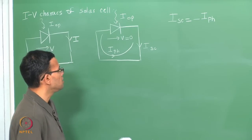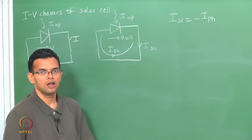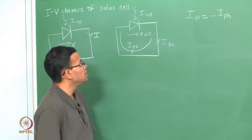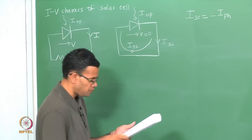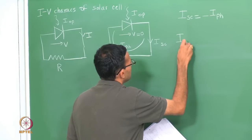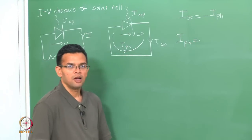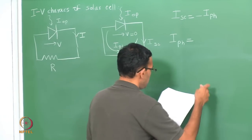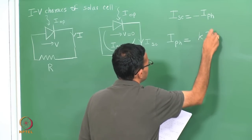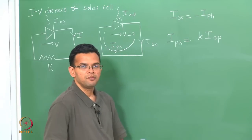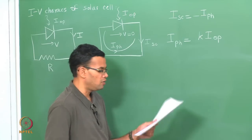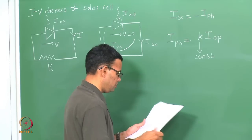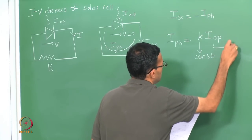I_SC is the short-circuit current — the current that flows through the device when it is short-circuited, with no external load. I_PH depends upon the intensity of solar light shining on your device. I_PH is usually some constant k times I_OP, where I_OP is the intensity of incident solar radiation and k is a constant.